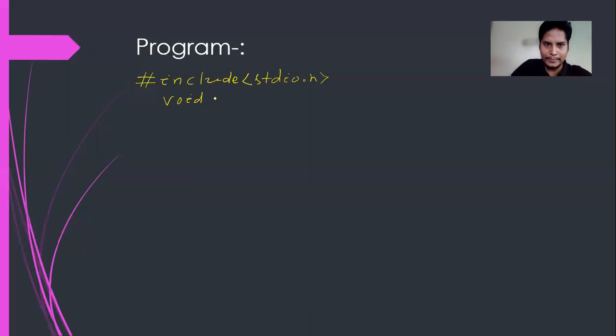Next, void main character ch is equal to suppose p within single quotation mark, I'm writing p.